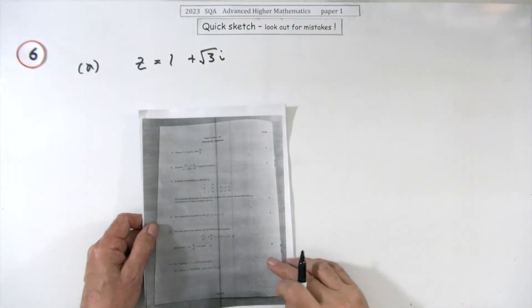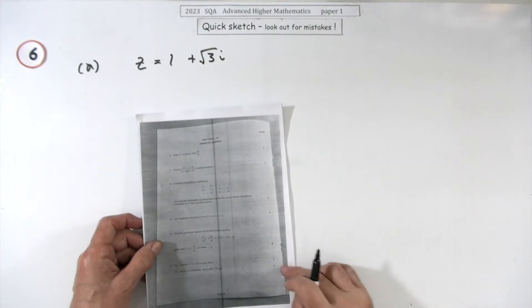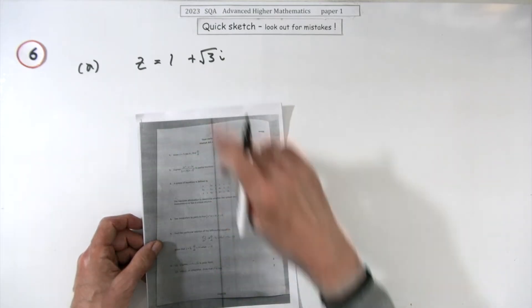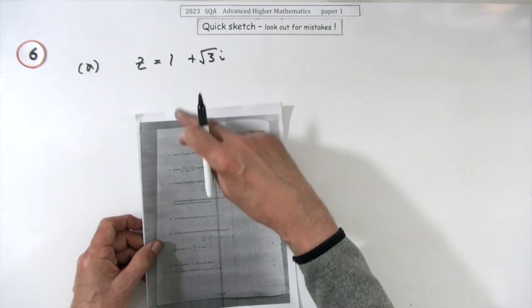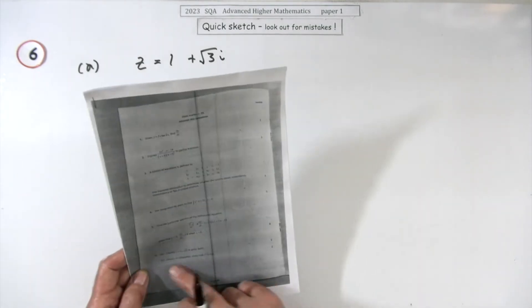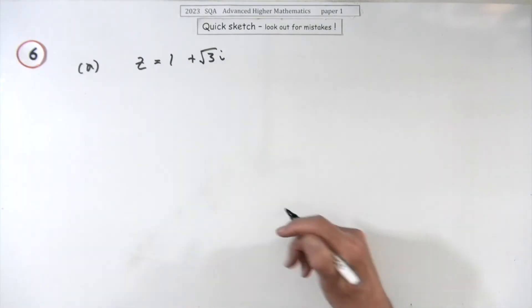So number six then from paper one of the 2023 Advanced Higher, the format question for complex numbers in either the Cartesian rectangular or the polar form. What we've got here for two marks: express that in polar form.